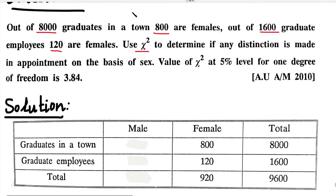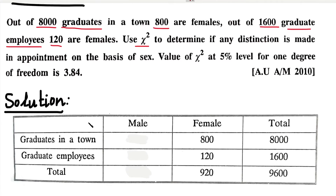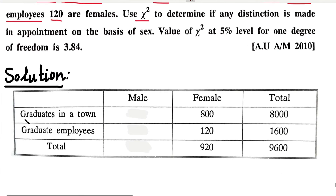We set up a table with two categories of people: graduates and graduate employees. In the table, the first row is graduates and the second is graduate employees. The graduate total is 8000 and the graduate employees total is 1600.